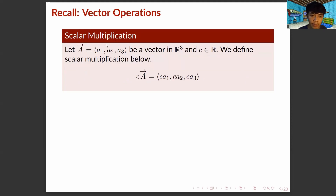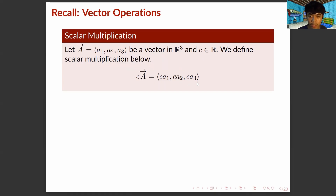For scalar multiplication, let vector A equal (A₁, A₂, A₃) be a vector in R3, and let C be a constant. The scalar multiplication C times vector A is equal to (CA₁, CA₂, CA₃).